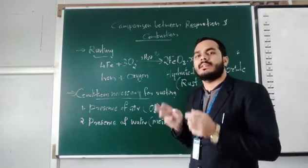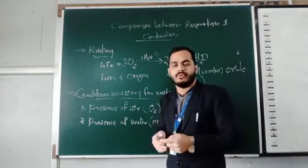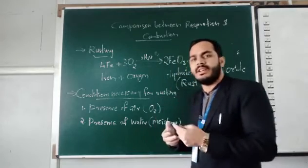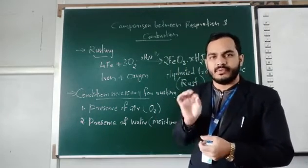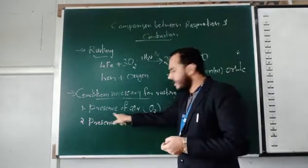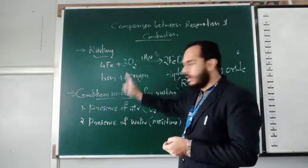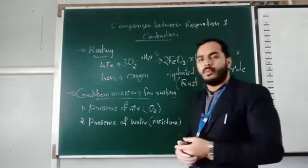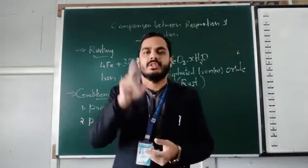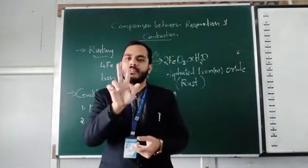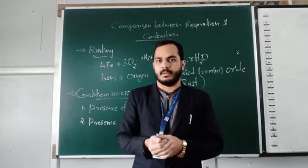There are two conditions necessary for rusting. The first is the presence of air, and the second is the presence of water — meaning moisture. Both of these factors are very necessary for the rusting process.